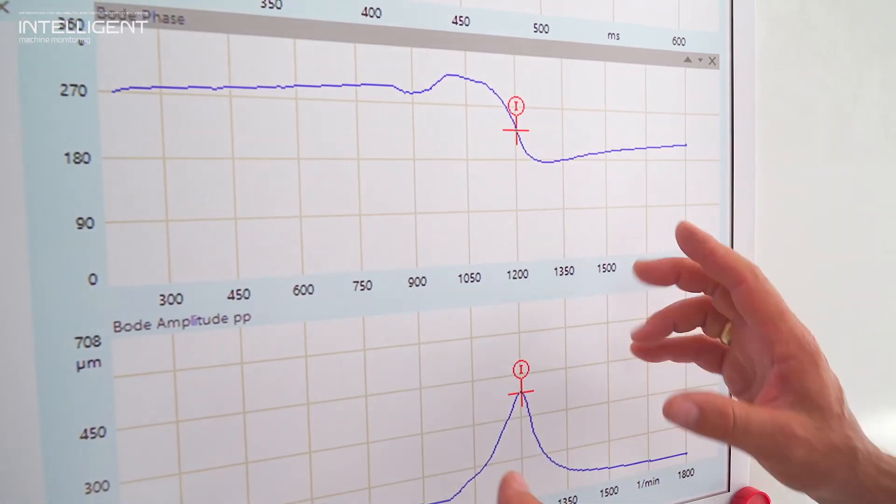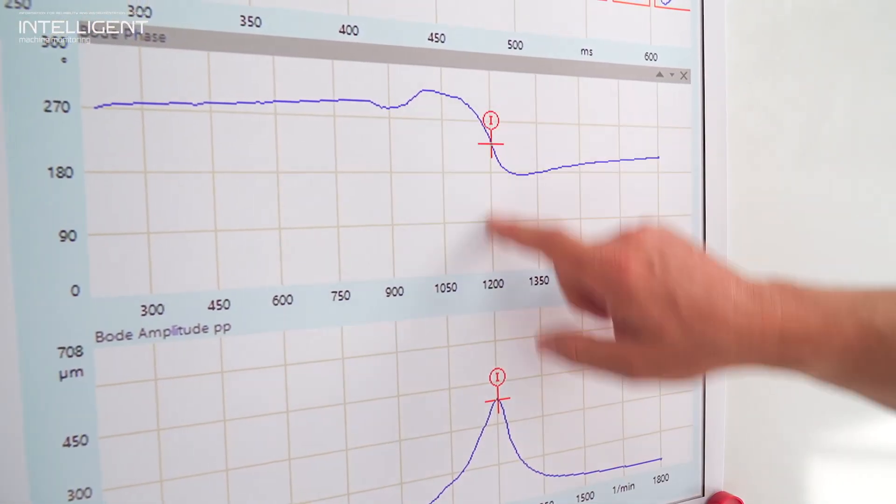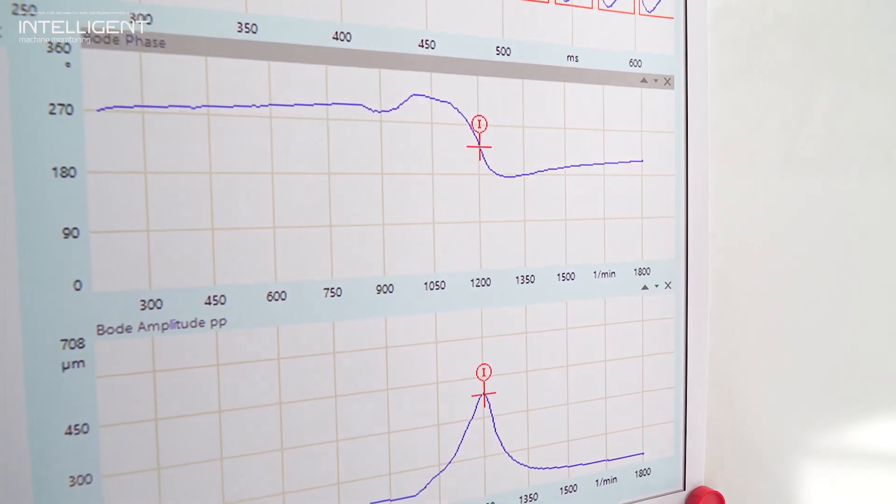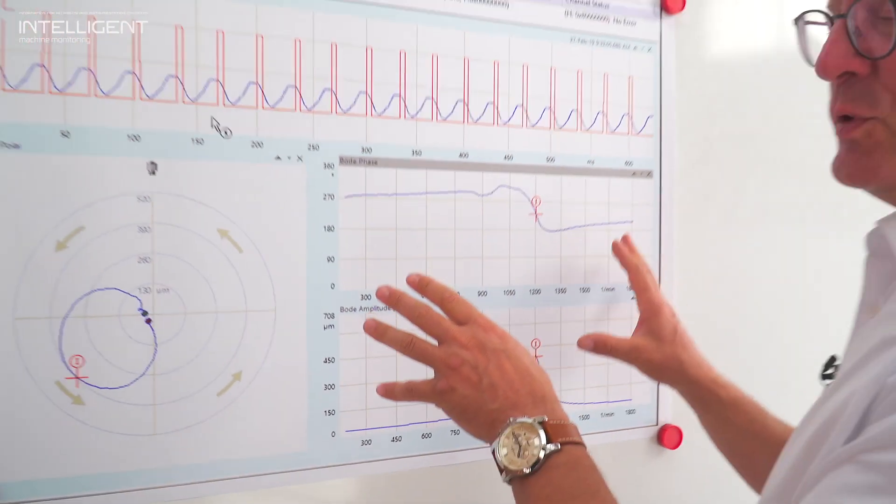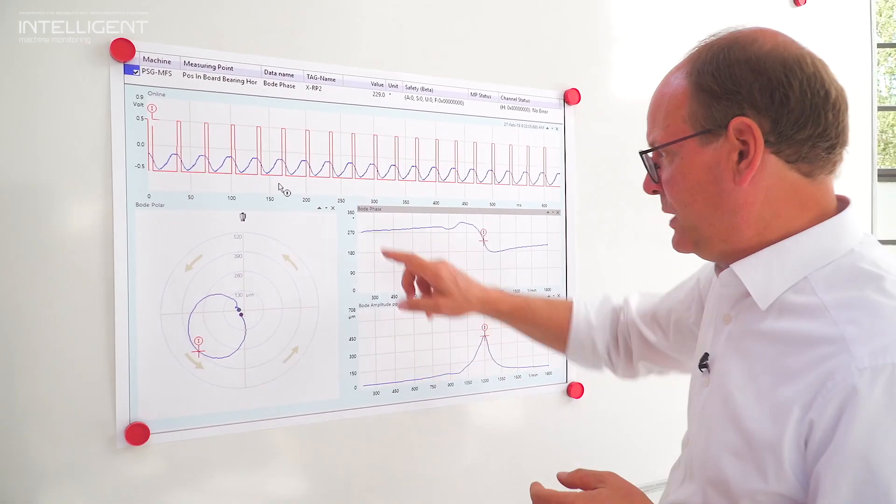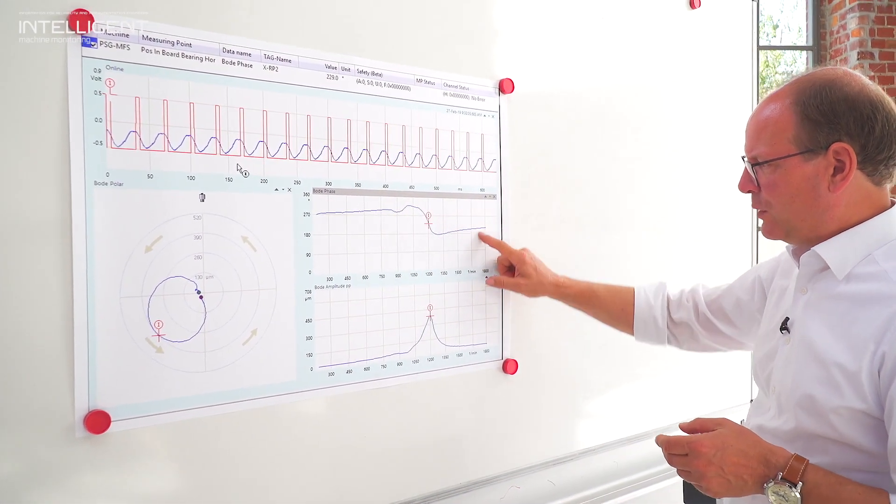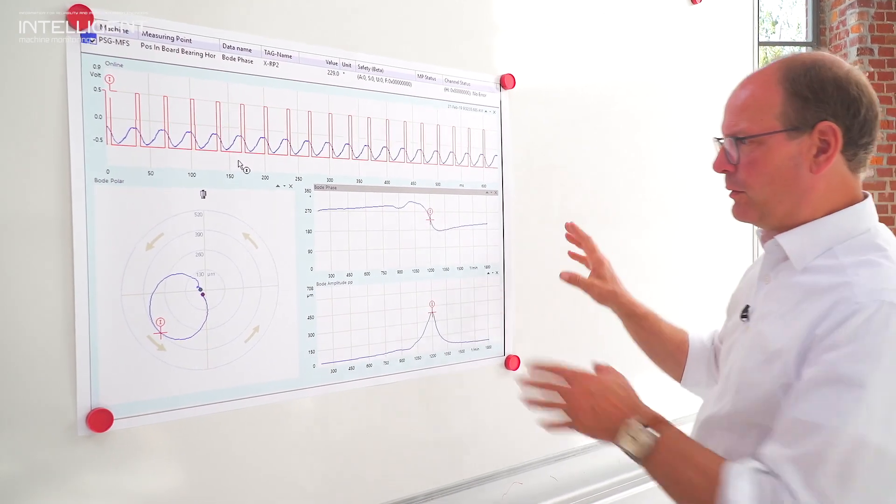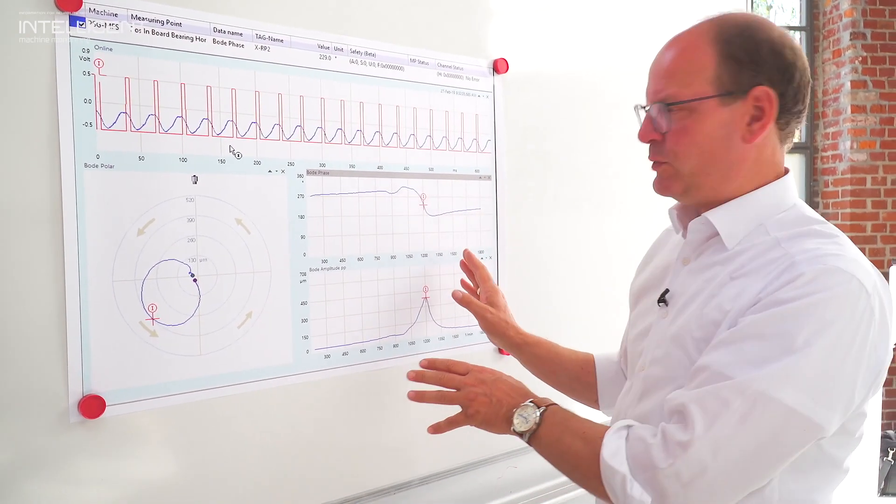In this case we see we have one critical speed, but it could be also that we have in a machine two critical speeds. In this case if we would have two critical speeds this would look like in this way and then it also goes down. But in this case we have only one critical speed.